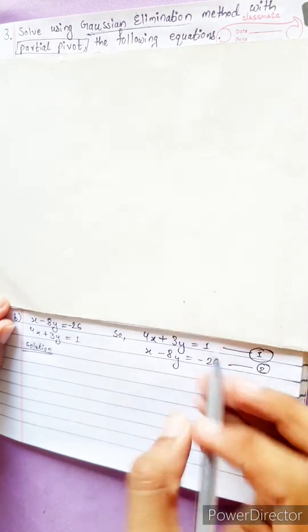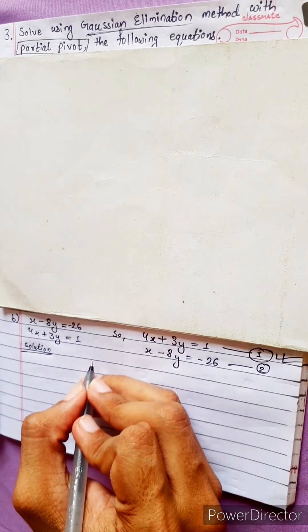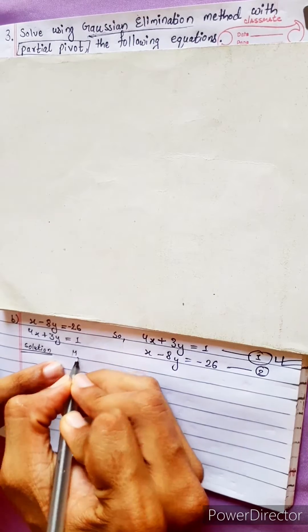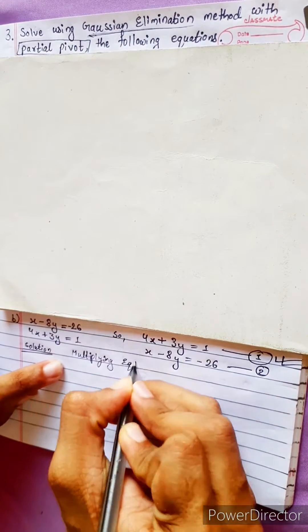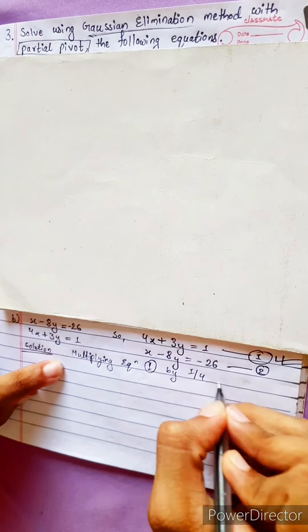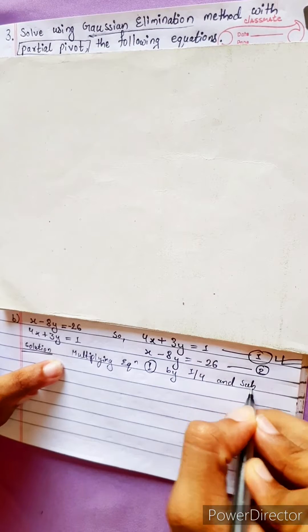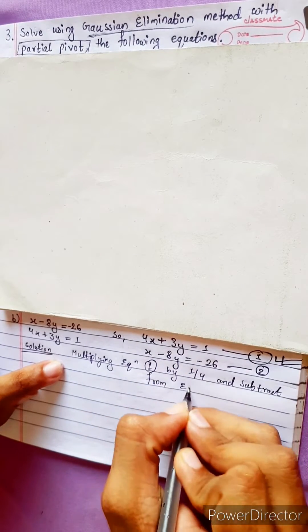And in partial pivot method, we always operate equation 1 only. We don't change equation 2. So, multiplying equation 1 by 1 by 4 and subtracting from equation 2.